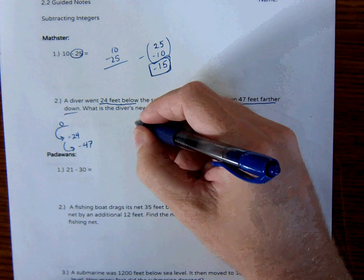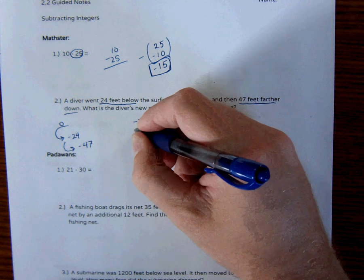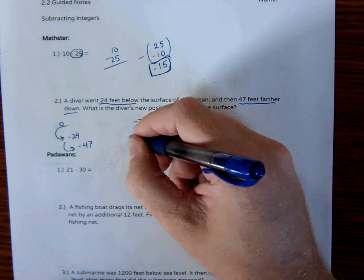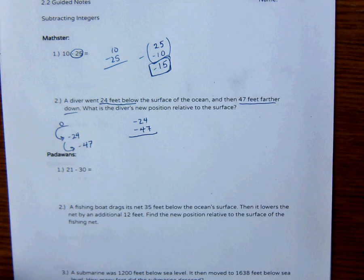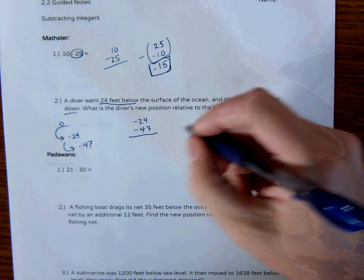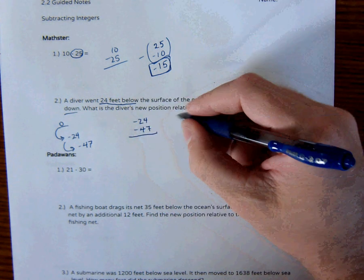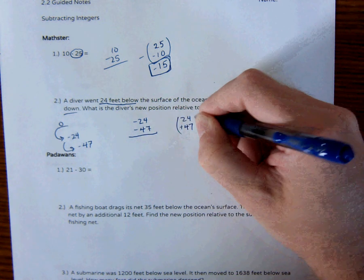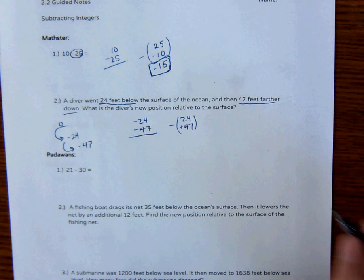So this is basically negative 24 minus 47. These have the exact same sign. So anytime I have two things that have the same sign, what I'm really doing is I'm just saying, this is 24 plus 47, but my answer is going to be negative.